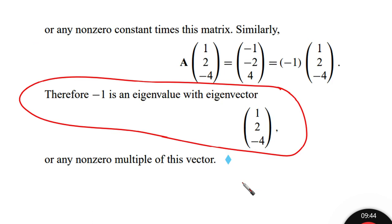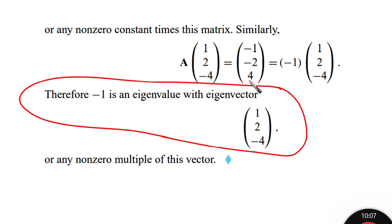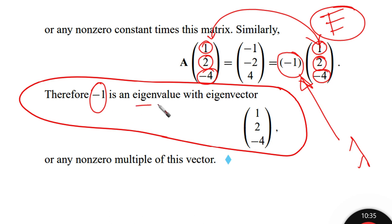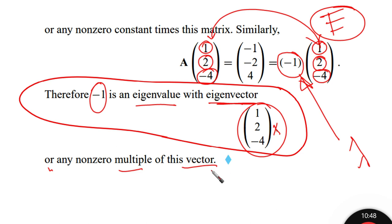Similarly, multiplying A by the vector [1, 2, -4] gives [-1, -2, 4], which equals -1 times [1, 2, -4]. So -1 is an eigenvalue with eigenvector [1, 2, -4], or any non-zero multiple of this vector.